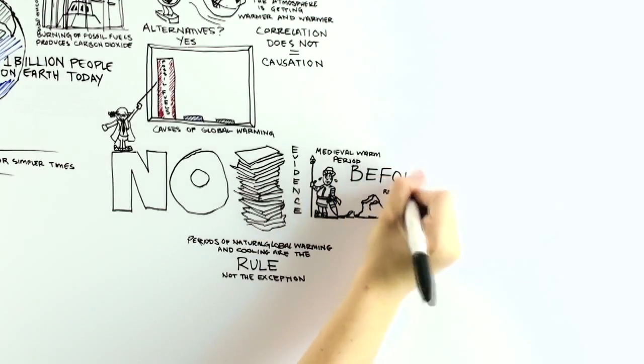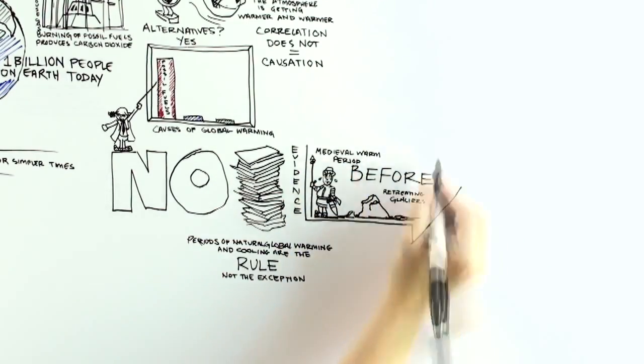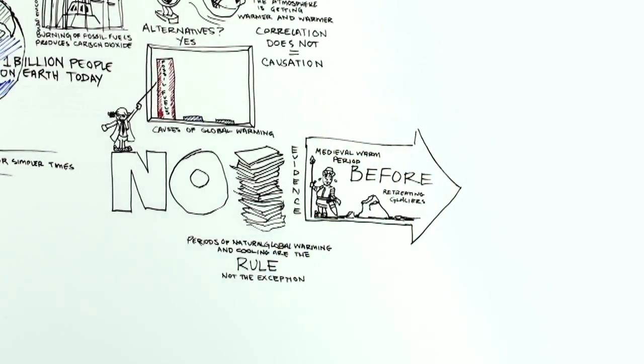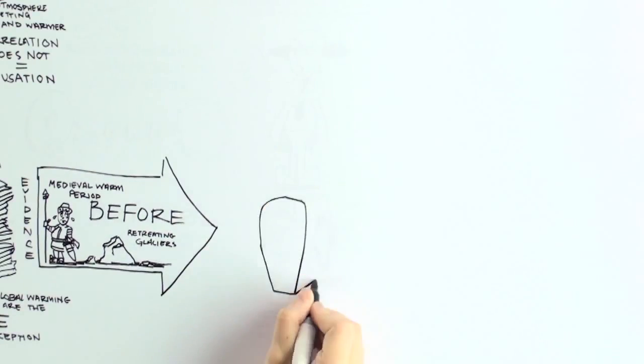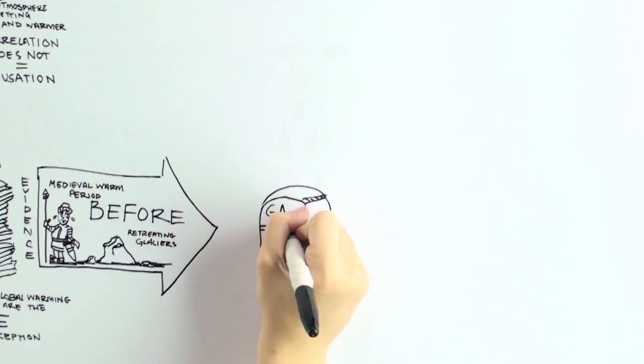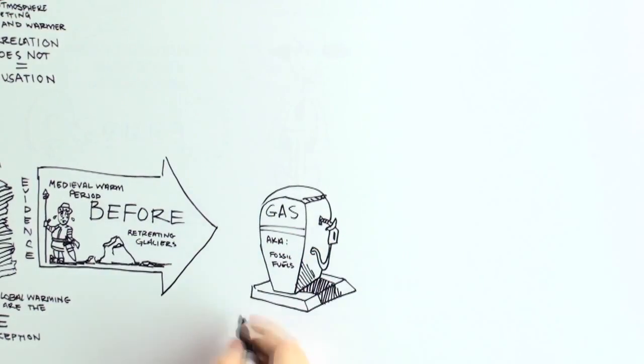And since most of that warming, including retreating glaciers at the end of the Little Ice Age, occurred well before fossil fuel use could be blamed, there are indications that there are natural climate variations at work, which are, as yet, not well understood.